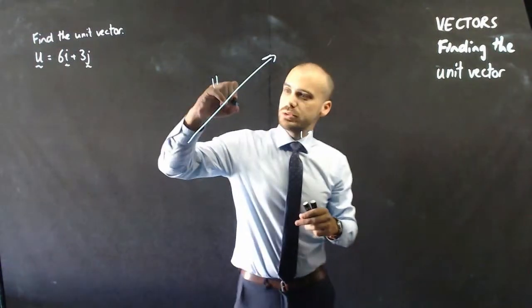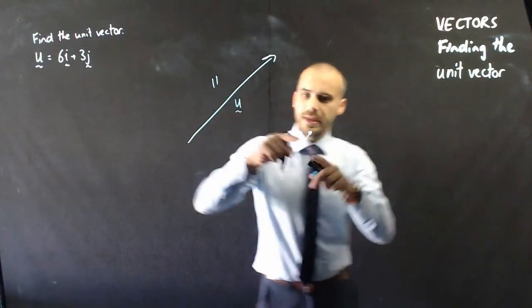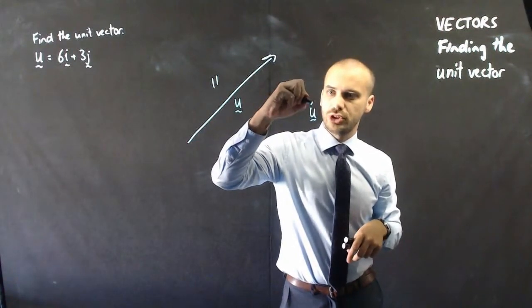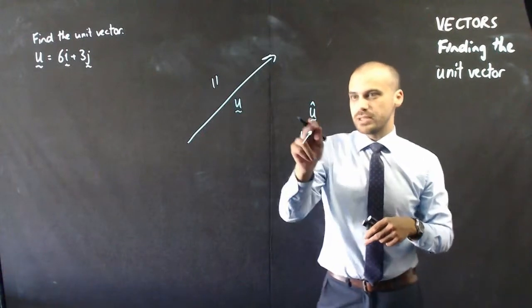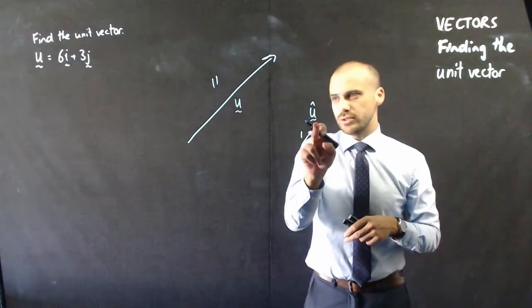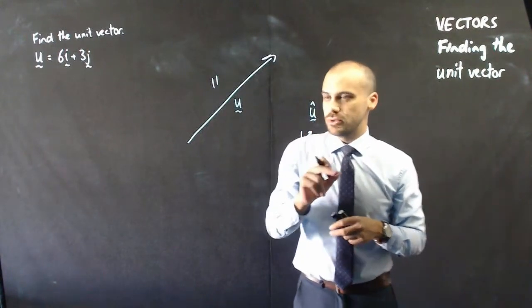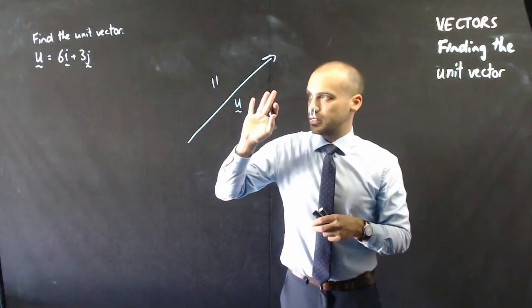Now, a little bit of notation, if this was vector u, then this unit vector is shown with a little hat on it. That means unit vector of u. That's vector u, that's the unit vector of vector u.